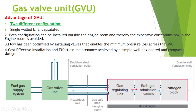If the system were fitted inside the engine room, it would need to be placed in a cofferdam — that cost is removed when it is placed outside. Flow has been optimized by installing valves that enable minimum pressure loss across the GVU. Cost-effective installation and effortless maintenance are achieved by a simple, well-engineered, and compact design. These are the advantages of the GVU.